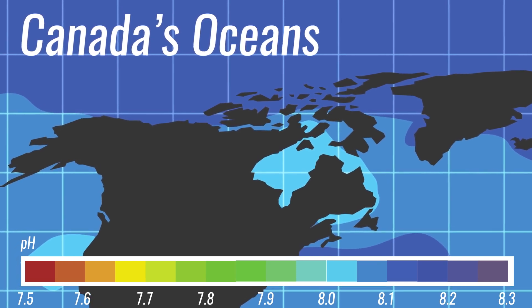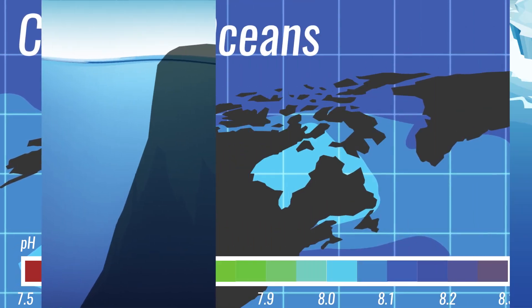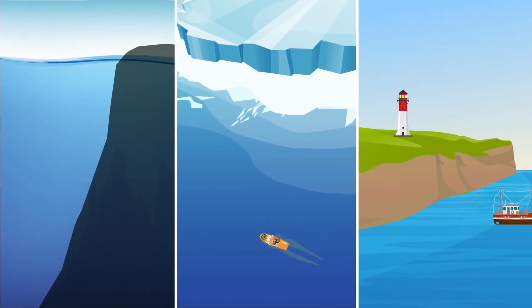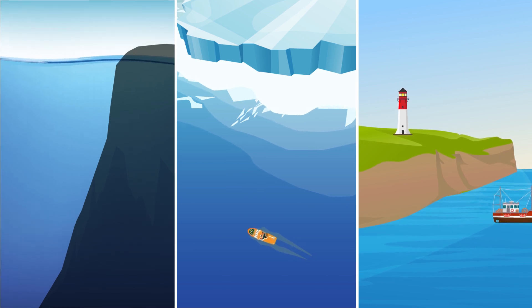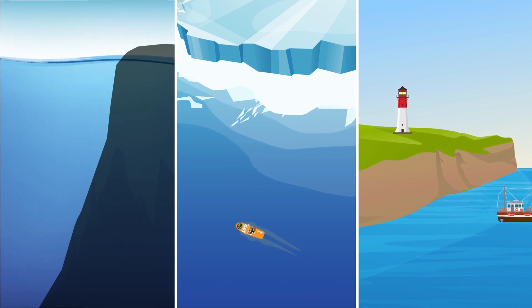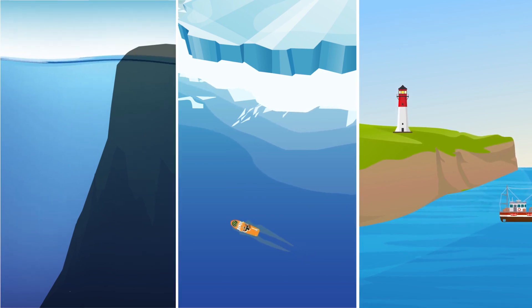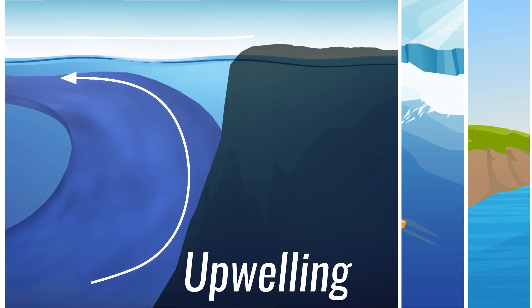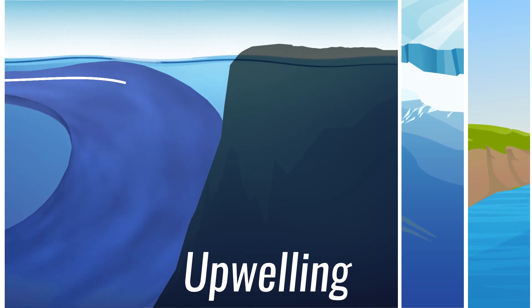OA is taking place in all three of Canada's oceans. There are conditions in each region which further contribute to OA. Seasonal upwelling, or the mixing of deep and surface water in the Pacific, increases OA.